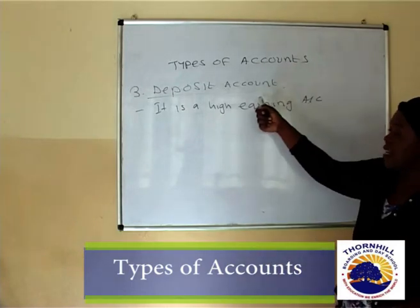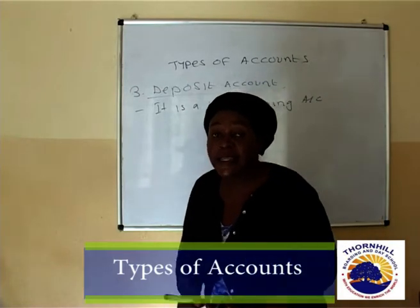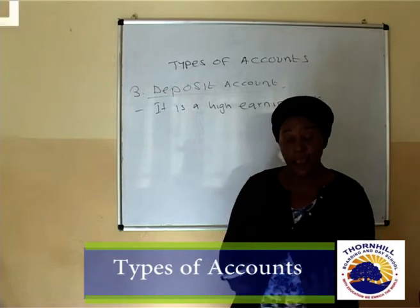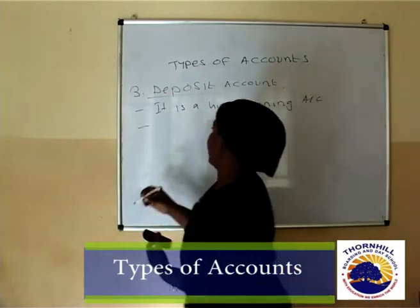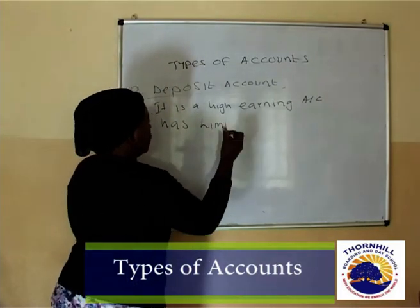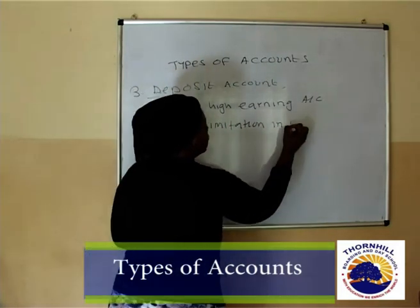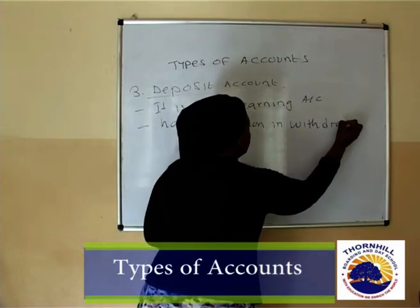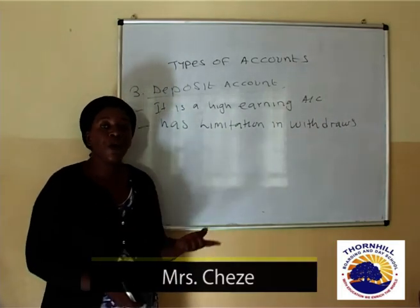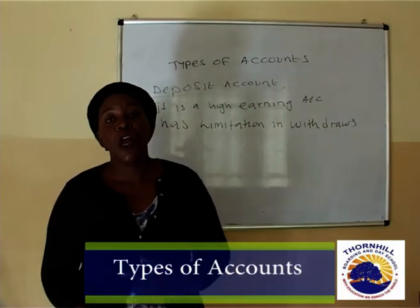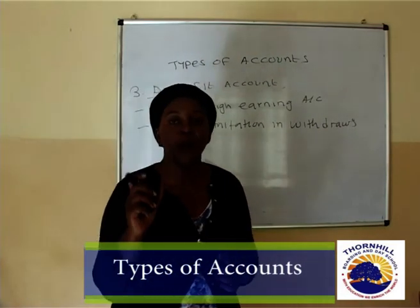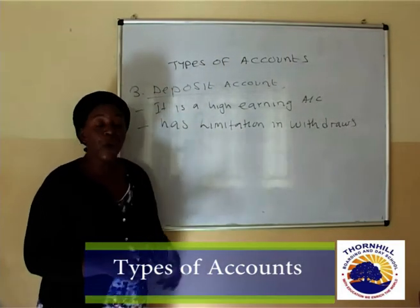As we said, this is a purely savings account. Another feature is that it has limitations in terms of how many withdrawals you can make — for example, in a month, in a quarter, or in a year. For example, you may only be allowed to withdraw once in a quarter. If you make a second withdrawal in that quarter, you will be charged a penalty.